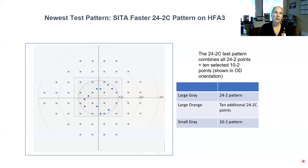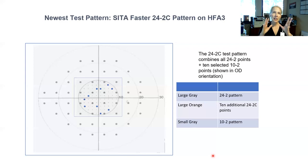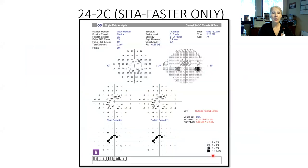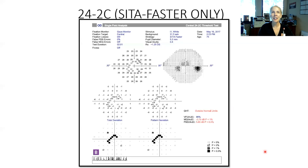There is a new test pattern on the Humphrey Field Analyzer called the 24-2C pattern — the C stands for central. It is a standard 24-2 test with five additional test points in the central 10 degrees above the horizontal midline and five below, represented by those blue points. This is a hybrid test between a 24-2 and a 10-2, allowing us to sample a little more of those macular ganglion cells without having to run two separate tests. I have this test but don't use it frequently — it looks a little strange when the printout comes out because of those additional test points.